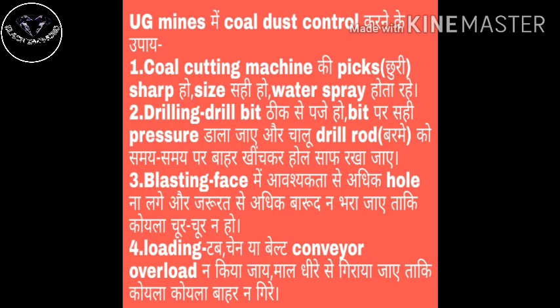Coal dust को कैसे control करना है: coal cutting machine के picks साफ, पैने और safe होने चाहिए और उन पर water spray होता रहे। Drilling में जो बरमा (drill bit) होता है, उसको समय-समय पर खींच कर बाहर निकालना है और फिर hole को साफ करना है।